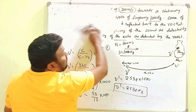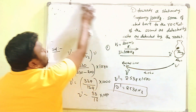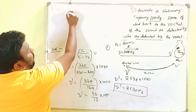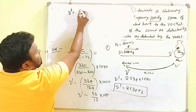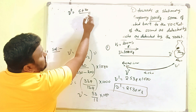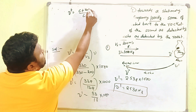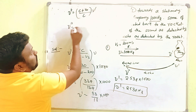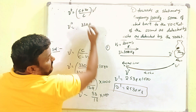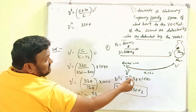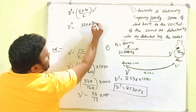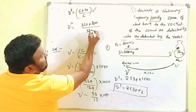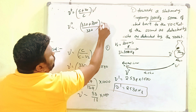Now we will find out the frequency detected at the rocket. For this, ν double dash = (c + v₀) / c × ν dash. So ν double dash = (330 + 200) / 330 × ν dash, which is 530 / 330 × 2538.